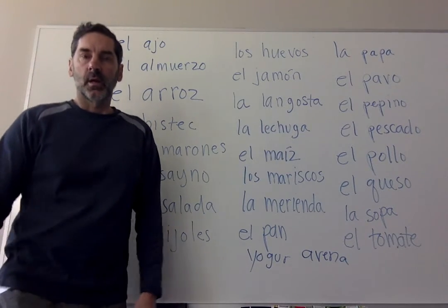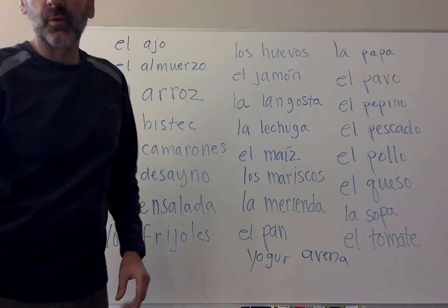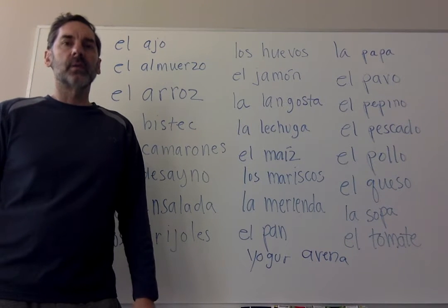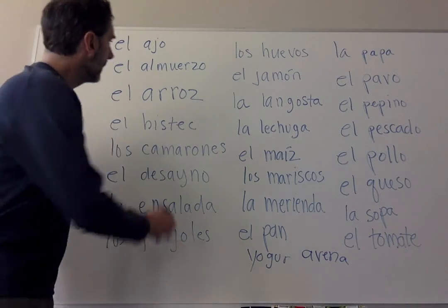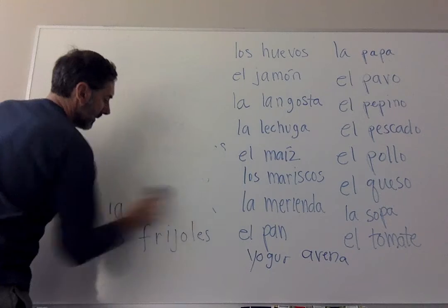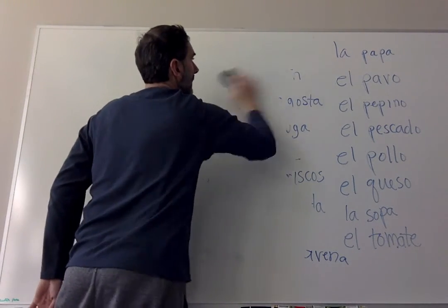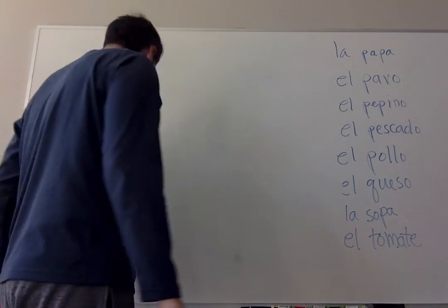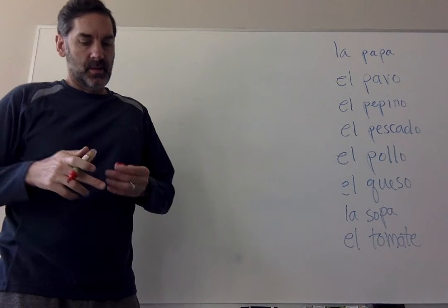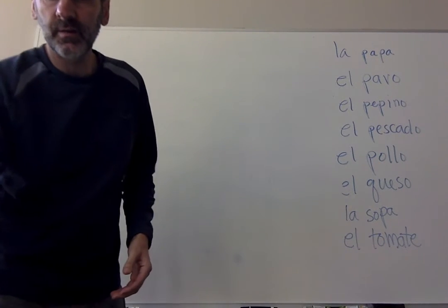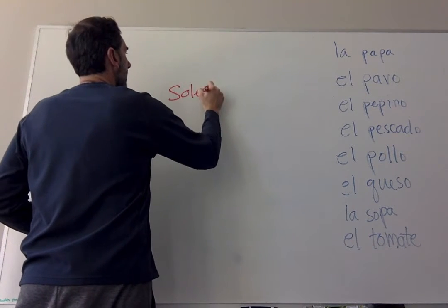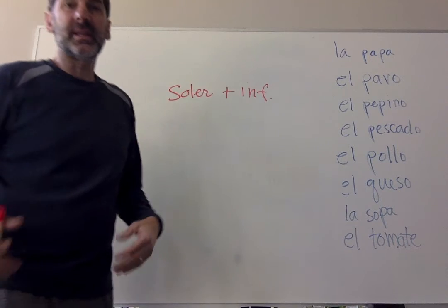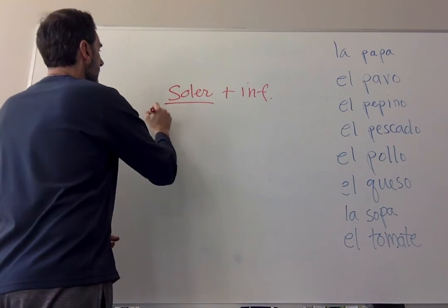That was our first theme for today — food vocabulary. The second point in lesson 4.2 is the verb soler plus an infinitive. This verb is going to be pretty easy because you've already worked with this conjugation pattern before — with the verb ir plus a plus infinitive, and with the verb estar plus an infinitive. Today we introduce the verb soler. Soler means to usually do something, or to be in a habit of doing something.